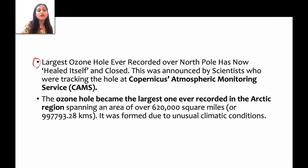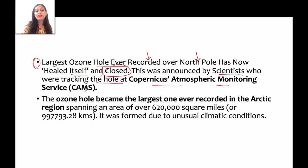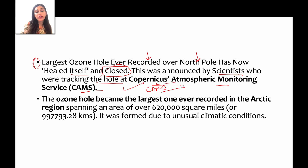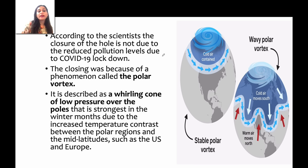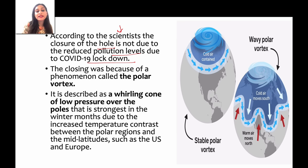The latest news is that the largest ozone hole ever recorded in the North Pole — tracked by the Copernicus Atmospheric Monitoring Service (CAMS) — has been healed, fixed, and closed. Scientists recently announced this, and the ozone hole in the Arctic region was the biggest ever recorded. Scientists believe the pollution levels are reduced partly because of the COVID-19 lockdown.